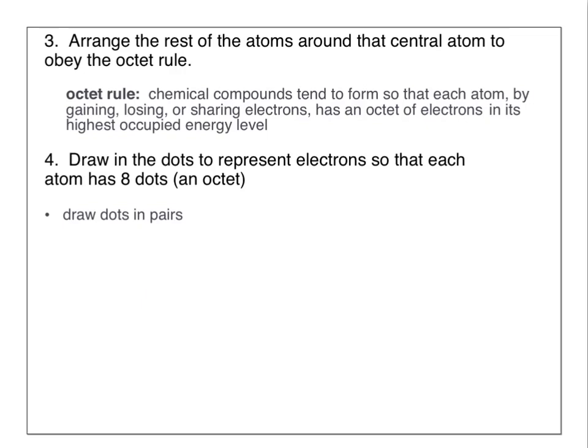Finally, draw in the lone pairs and shared pairs of electrons so that each atom has its octet—8 electrons. Always draw these dots in pairs because electrons come in pairs in orbitals.